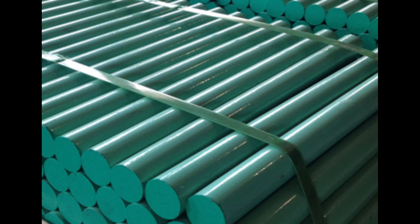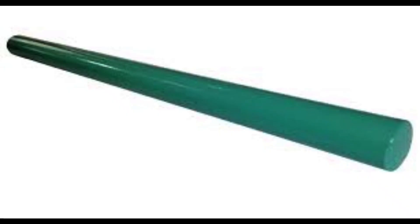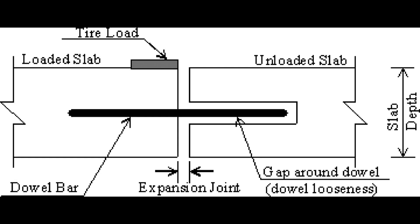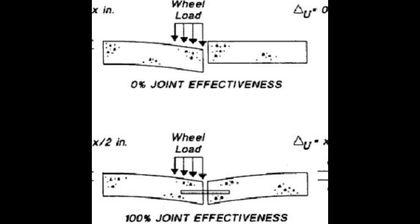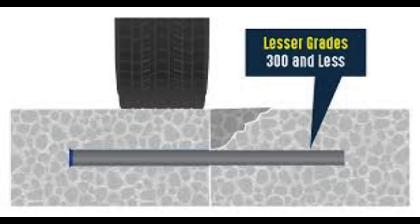What is the purpose of dowel bars in pavement? Dowel bars are short steel bars that are installed in concrete slabs to provide a mechanical connection that doesn't restrict horizontal joint movement. They are designed to reduce joint deflection and stress in the approach and leave slab by increasing load transfer efficiency.